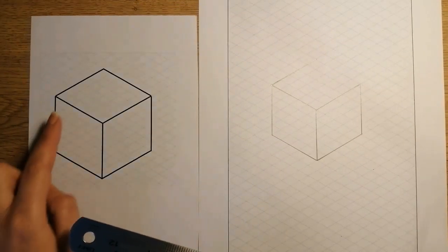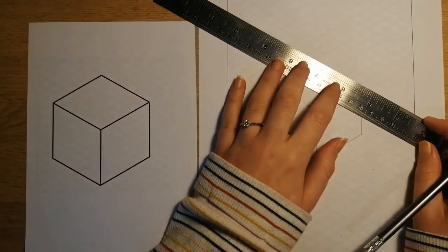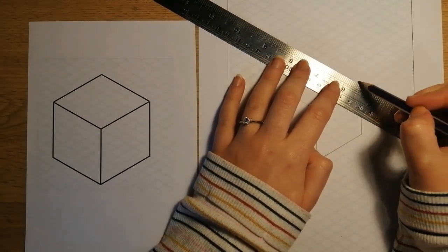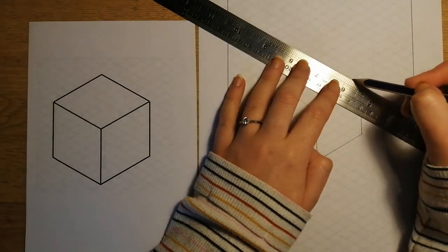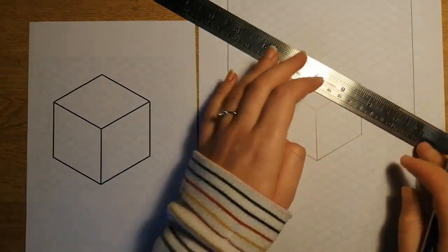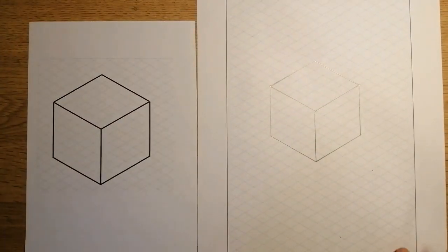So I've drawn in this line here and then over on the other side, joining it up, double checking one, two, three, four, five wide. And that is my isometric cube.